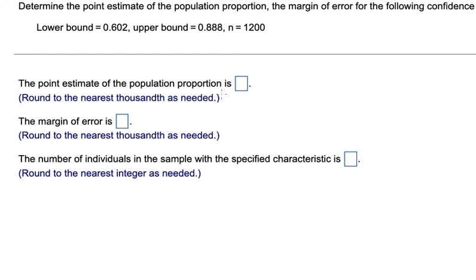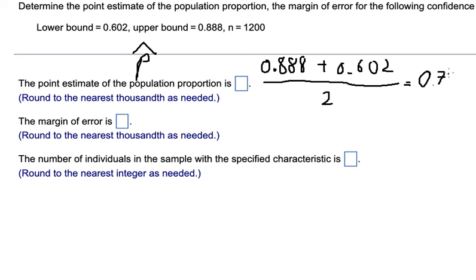To calculate this one, we will use this number in here plus this number in here, we divide by two. Why do I need to do this way? Because the value p in here is the middle between the upper and the lower. That's why we need to use the average. We calculate this one and we got 0.745.